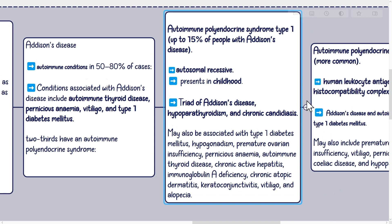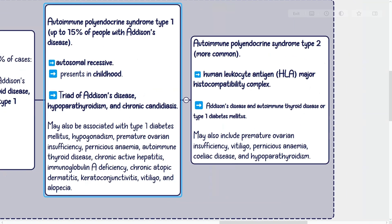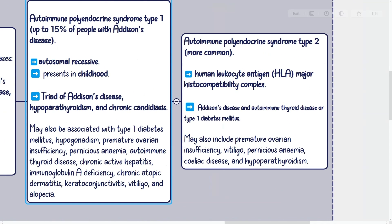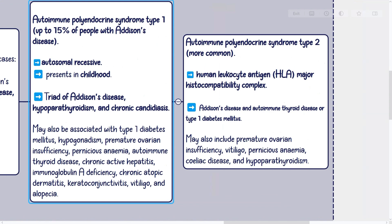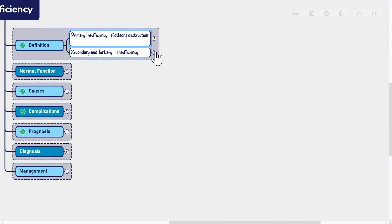Autoimmune polyendocrine syndrome type 2 is more common. It is a complex genetic trait with links to human leukocyte antigen (HLA) and the major histocompatibility complex. It usually involves Addison's disease and autoimmune thyroid disease, or type 1 diabetes mellitus. It may also include premature ovarian insufficiency, vitiligo, pernicious anemia, celiac disease, and hypoparathyroidism.